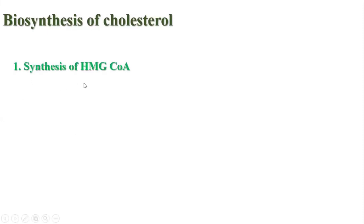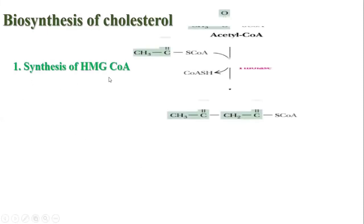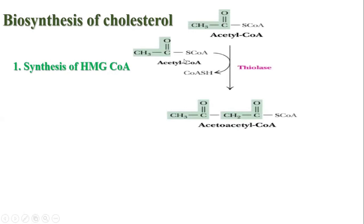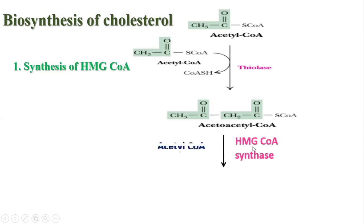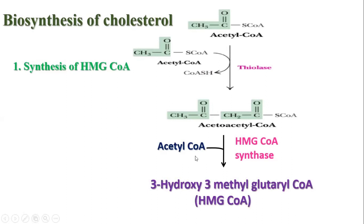First let's see the synthesis of HMG-CoA. Two molecules of acetyl-CoA combine in the presence of the cytosolic enzyme thiolase to form acetoacetyl-CoA. Then one more acetyl-CoA molecule combines in the presence of HMG-CoA synthase to form 3-hydroxy-3-methylglutaryl-CoA, also known as HMG-CoA.